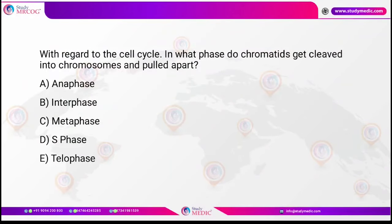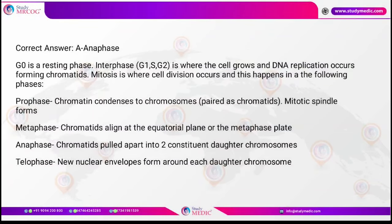Question: In what phase do chromatids get cleaved into chromosomes and pulled apart? This occurs in anaphase. In the cell cycle, G0 is a resting phase. Interphase includes G1, S, and G2 phases where the cell grows and DNA replication occurs forming chromatids. Then in mitosis: prophase involves condensation of chromatin into chromosomes and formation of the mitotic spindle; metaphase involves alignment of chromatids at the equatorial plate; anaphase is where chromatids are pulled apart into two daughter chromosomes; and telophase is where new nuclear envelopes form and cytoplasmic division occurs, giving two diploid daughter cells.